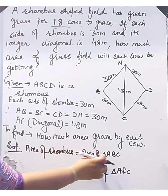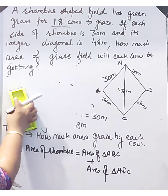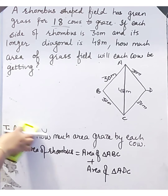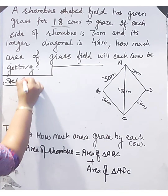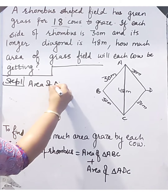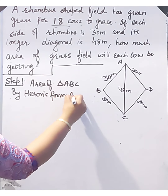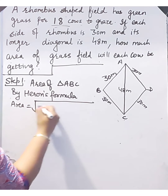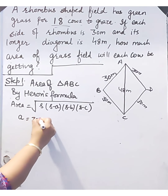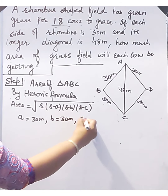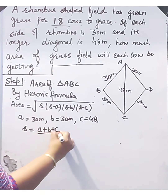In step 1, we will calculate the area of triangle ABC using Heron's formula. Area equals the square root of s(s−a)(s−b)(s−c). Here a = 30 m, b = 30 m, and c = 48 m. The semi-perimeter formula is s = (a + b + c) / 2.